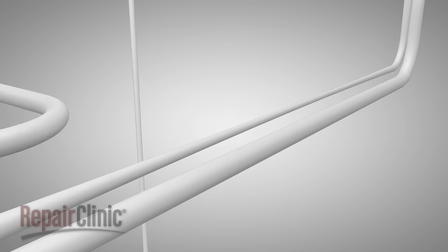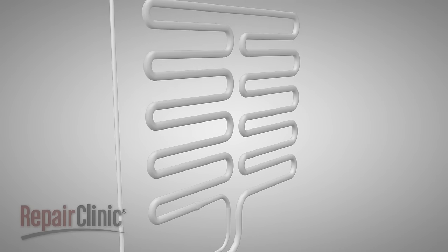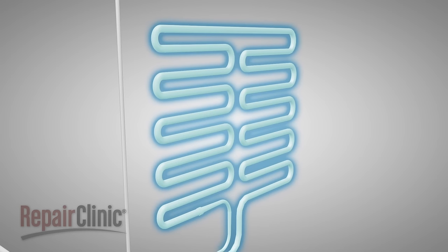Once the refrigerant has passed through the condenser coils and a capillary tube, it travels to the evaporator coils, where the liquid expands into a gas, making the coils cold.